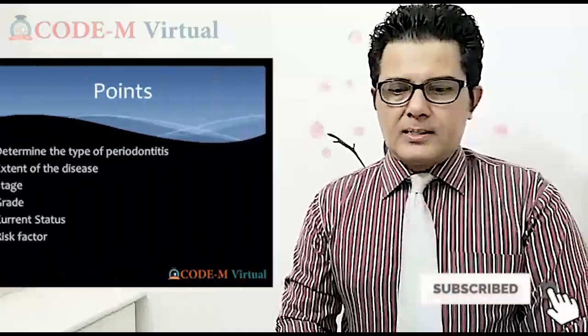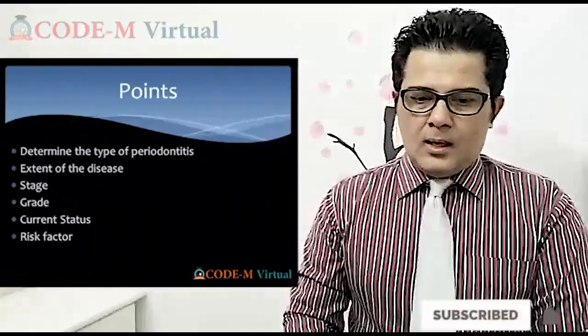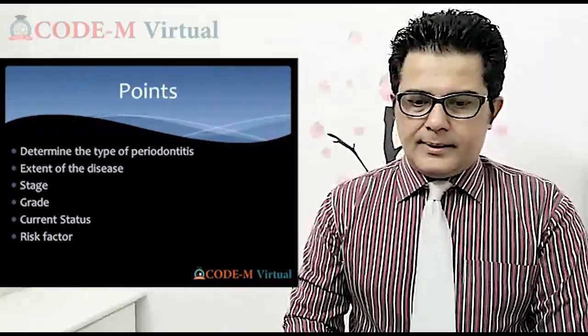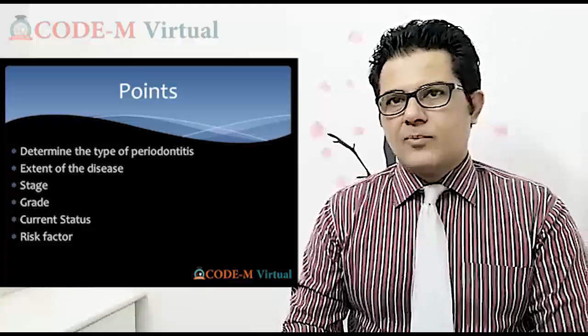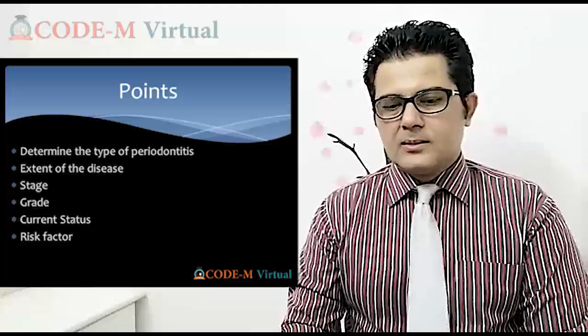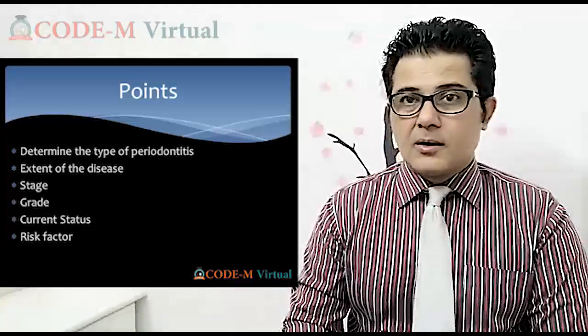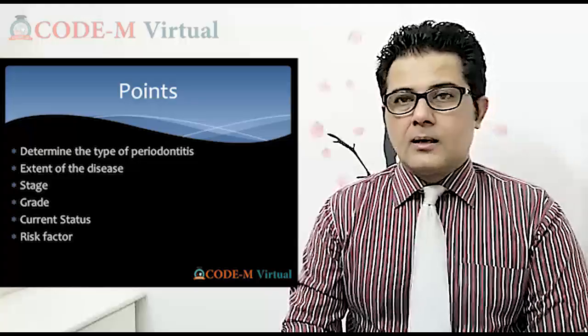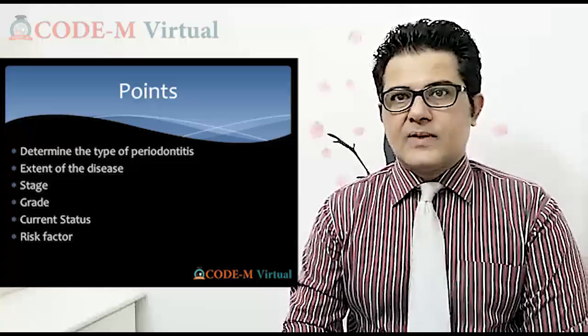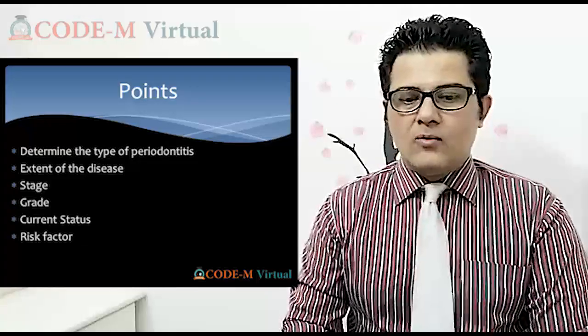In the last lecture, we concluded with the points for the determination of the type of periodontitis, extent of the disease, staging, grading, current status of the disease, and the bisectors. Now we will discuss these in some more detail.